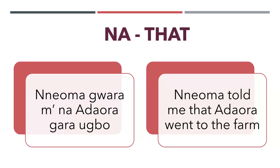Now, this is just one example of how Na works as a conjunction. But as a complementizer, which is 'that': Norma told me that Adora went to the farm — demonstrating Na functioning as the complementizer 'that' in a sentence.